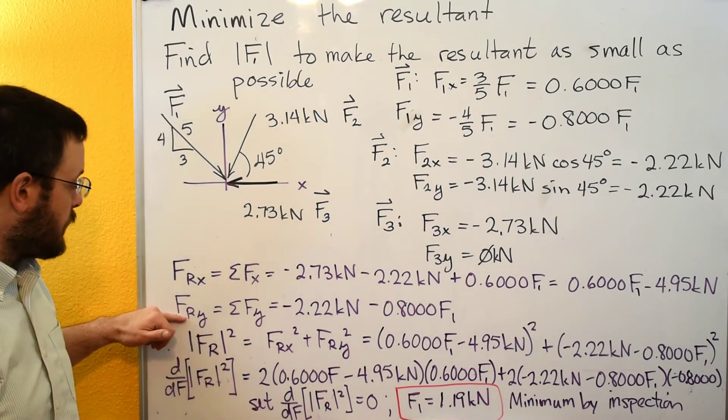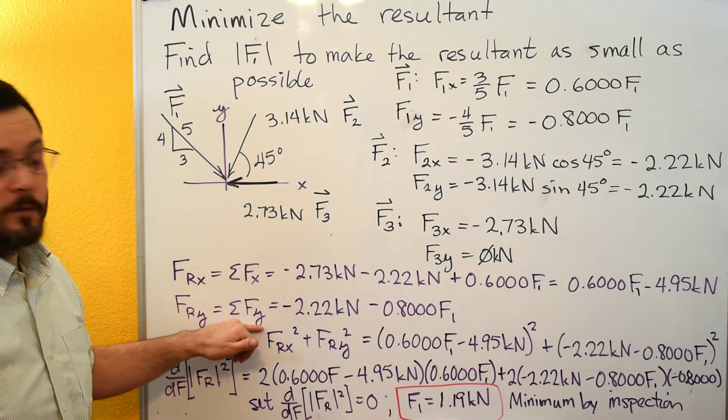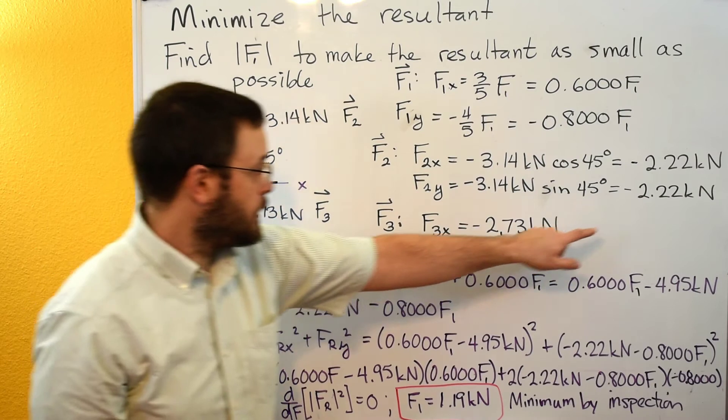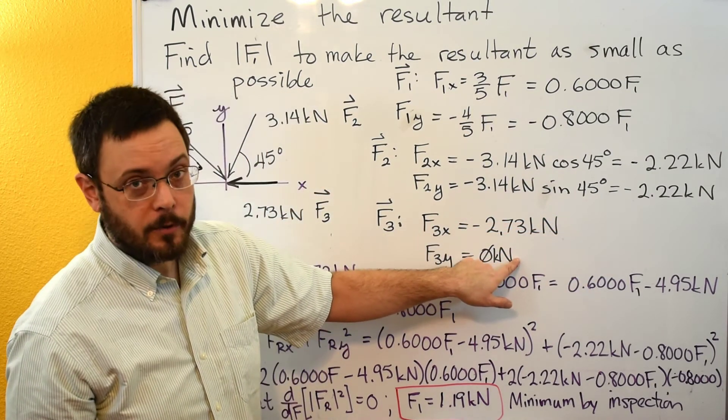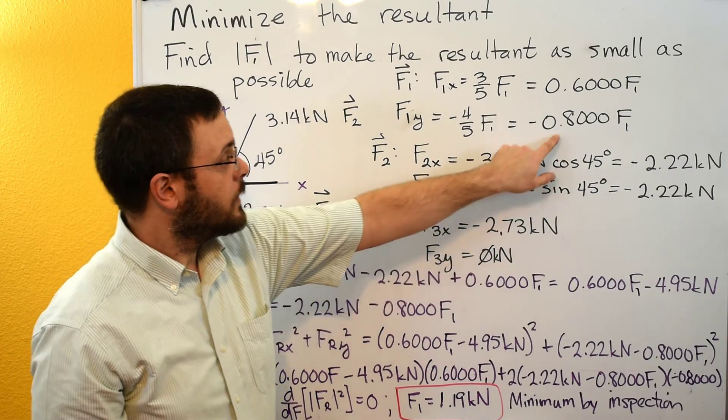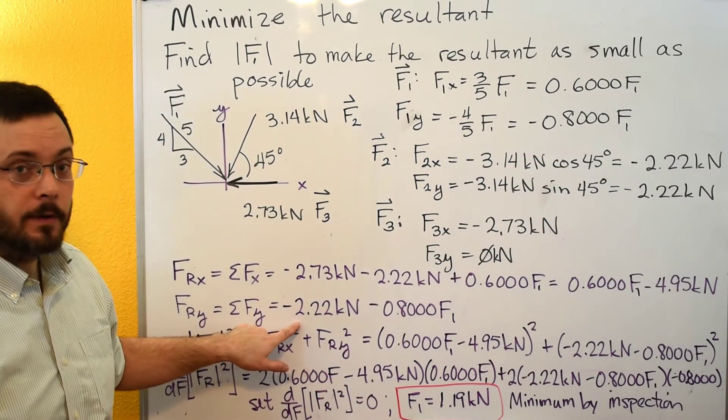For FRY component, that's going to be the summation of all the Y components. That would be the negative 2.22 here, a zero here so that doesn't count, and then the negative 0.8 F1 here. So that would be this expression.